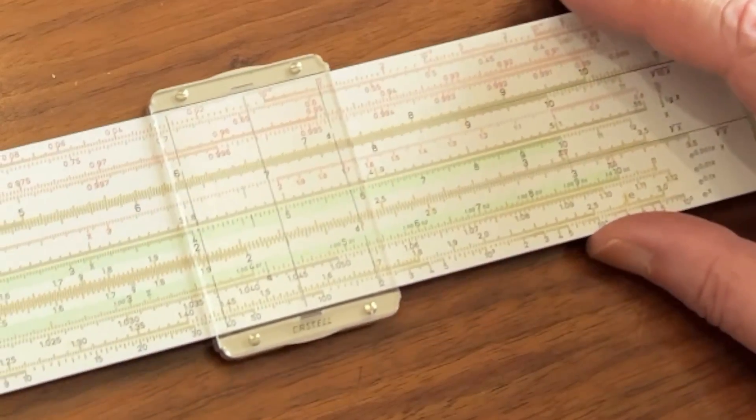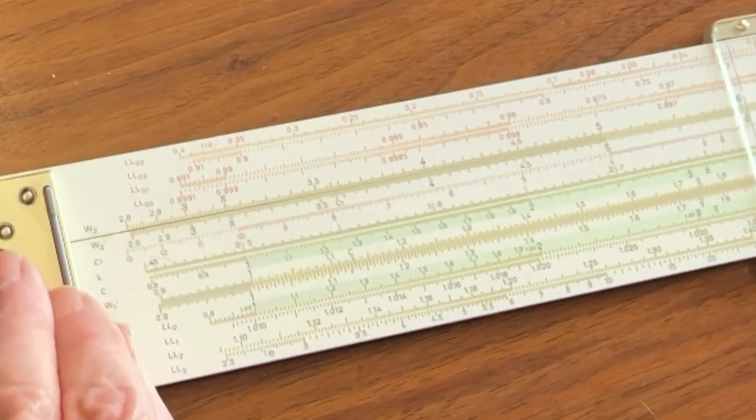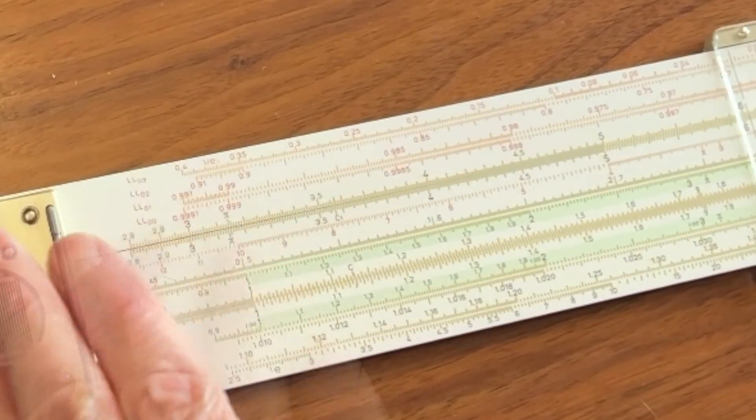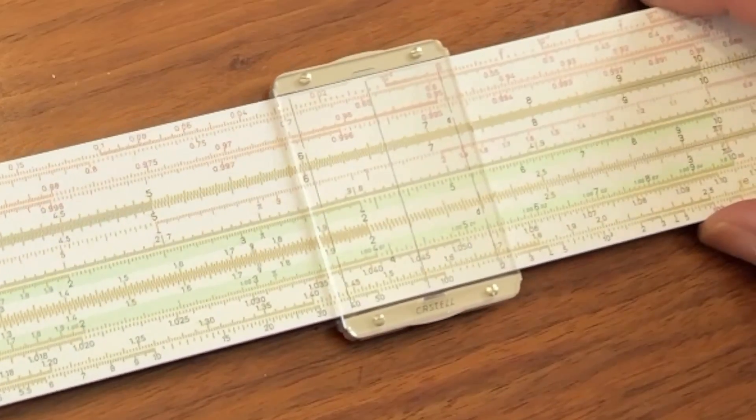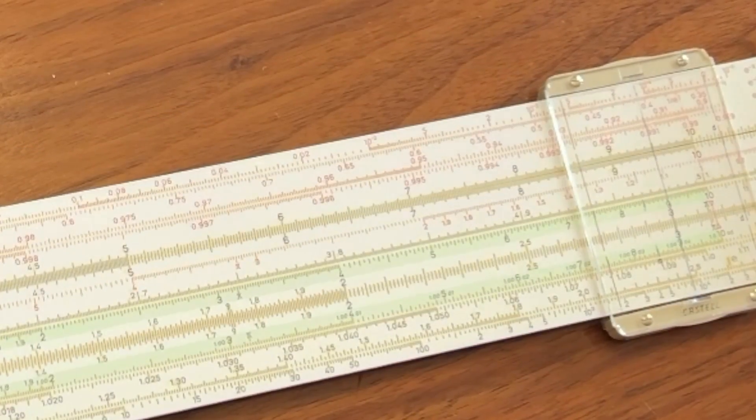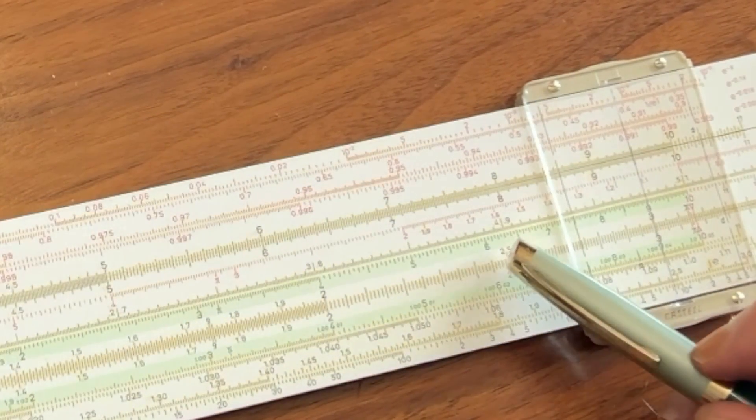Now there's another nice feature of this as well, and that is that we have a log scale on here. Now if you close the slide, in other words, line everything up, and you wanted to find the log of, say, 3, you come out here to 3 on the W1 scale, and then you would read straight over here to the log scale.